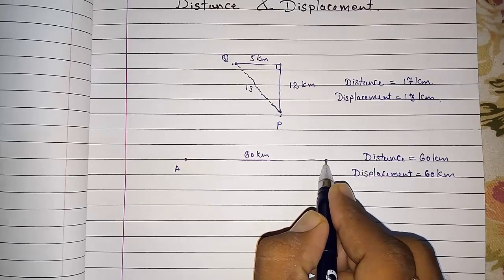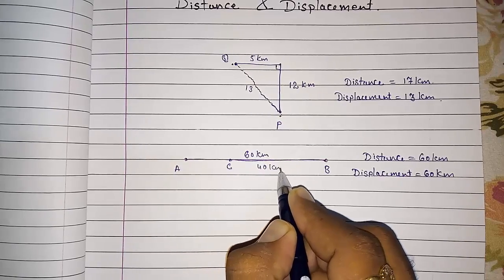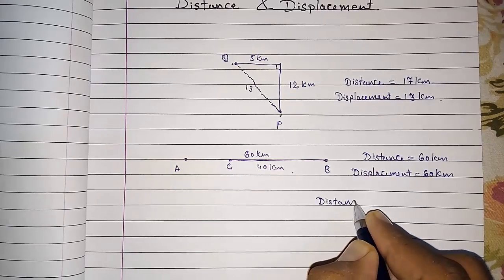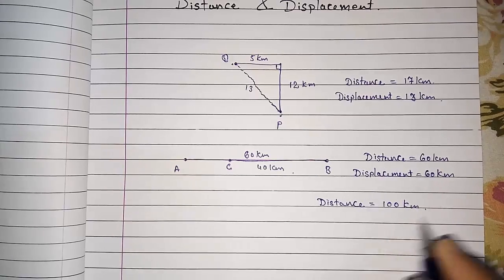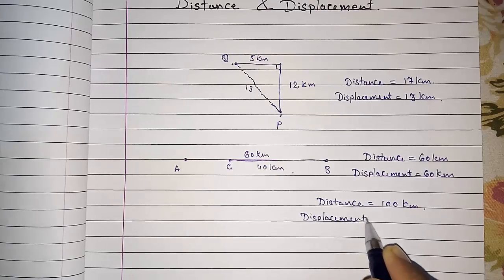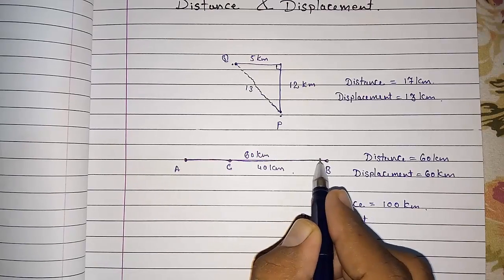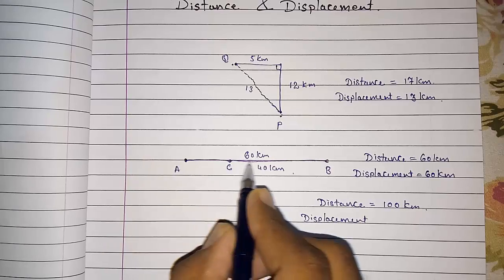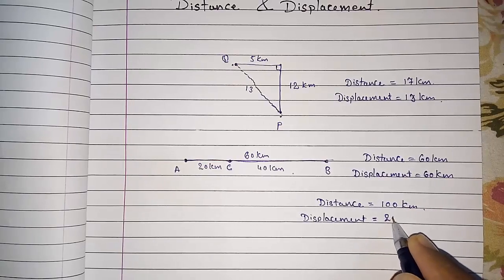But from point B, if he is coming back 40 kilometers and reaches point C, what will be the distance covered? Distance will be 60 kilometers plus 40 kilometers — 100 kilometers. But what will be the displacement? We have to look at the last point. From A, the shortest distance to the ending point will be 60 minus 40, which is 20 kilometers. So the displacement will be 20 kilometers.